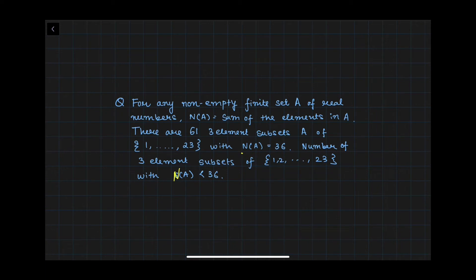Now let us see the application of bijection in a combinatorics question. For any non-empty finite set A of real numbers, N(A) is the sum of elements in A. There are 61 three-element subsets A of {1 to 23} with N(A) = 36. You have to find the number of three-element subsets of {1 to 23} with N(A) less than 36. I urge you to pause the video, give it a try, and then proceed.